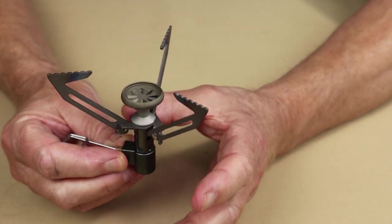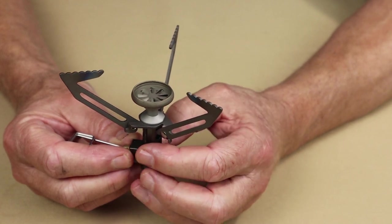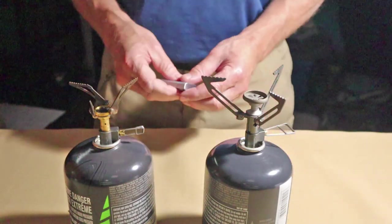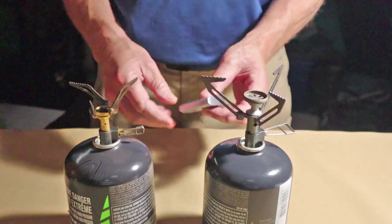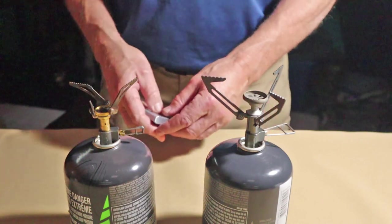I guess what I'll do now is I'll set the two of these up on butane canisters, light them up, and we can take a look at the flame patterns. I've turned off all the lights except one, which I'll turn off after I get both of these stoves lit.